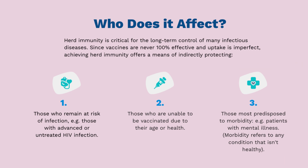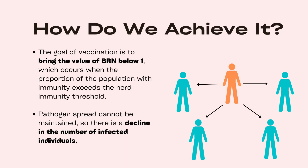The term morbidity refers to any condition that isn't healthy. How do we achieve herd immunity? The herd immunity threshold depends on a parameter known as the BRN, or basic reproduction number. This refers to the average number of secondary infections caused by a single infectious individual introduced into a completely susceptible population. A hypothetical pathogen with a BRN of four would mean that one infected host will infect four others during the infectious period, assuming that no immunity exists within the population. Therefore, the more communicable a pathogen, the greater its associated BRN and the greater the proportion of the population that must be immune to block sustained transmission. The goal of vaccination programs is to bring the value of BRN below one, which occurs when the proportion of the population with immunity exceeds the herd immunity threshold. At this point, pathogen spread cannot be maintained, so there is a decline in the number of infected individuals within the population.